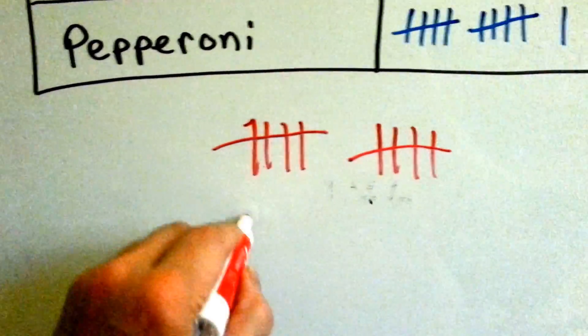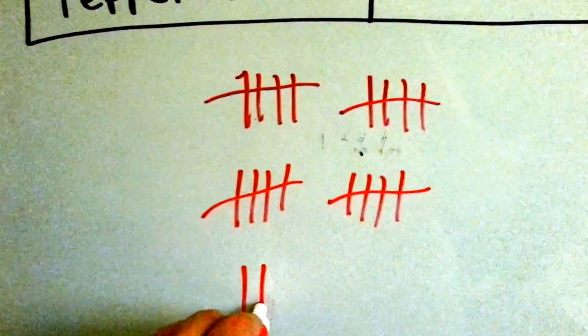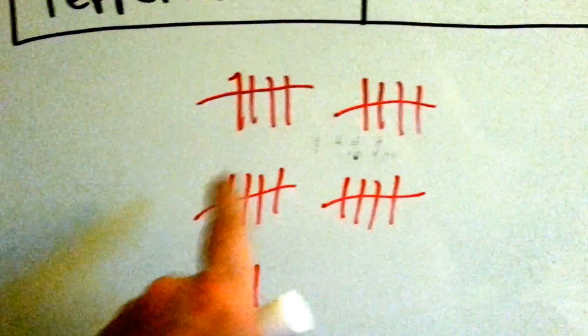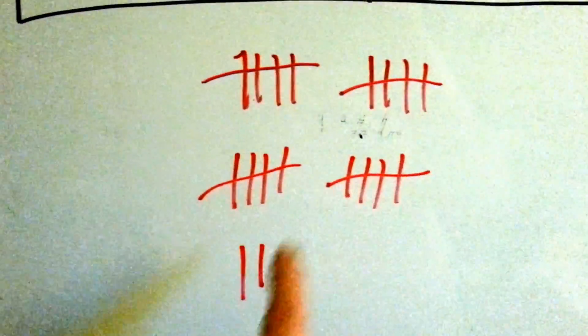1, 2, 3, 4, 5. 1, 2, 3, 4, 5. 1, 2, 3, 4, 5. 1, 2. That way, when you need to count them, you skip count by 5's and you can go really fast. 5, 10, 15, 20, 22.